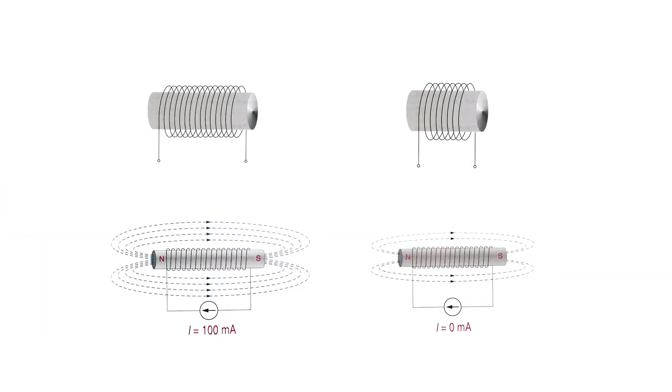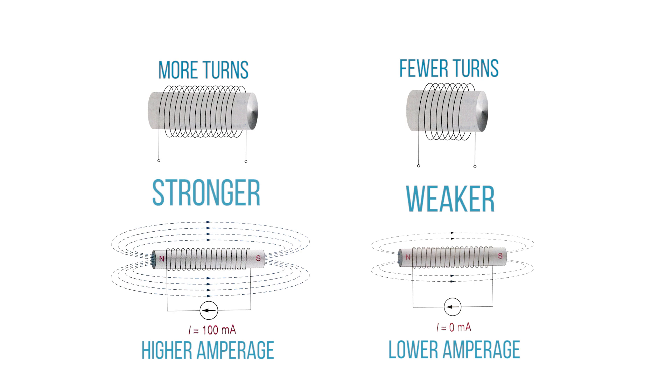Since magnetomotive force, or MMF, is calculated by multiplying the amps by the number of turns, then we know that having a higher amperage, or more turns, would give us a stronger magnetic field. Voltage in an electrical circuit is also called electromotive force, or EMF. Magnetomotive force, or MMF, in a magnetic circuit is like voltage in that it's the amount of potential in the circuit, just instead of electrical potential, it's magnetic potential.